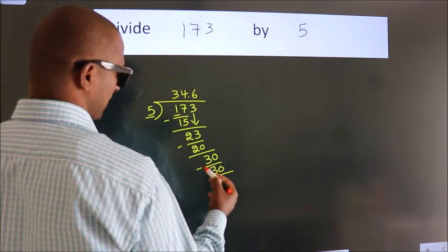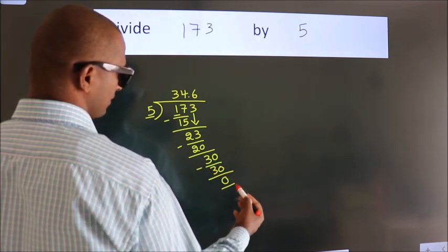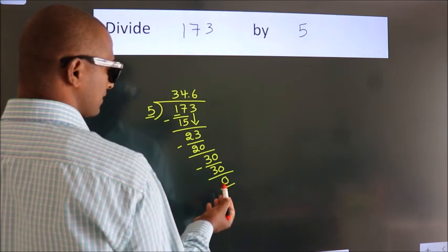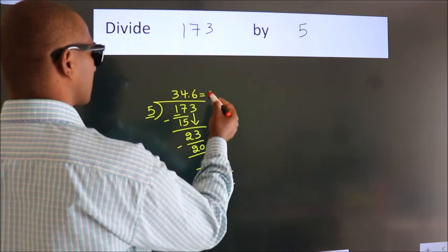Now we subtract. We get 0. We got remainder 0. So this is our quotient.